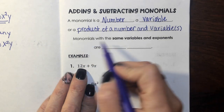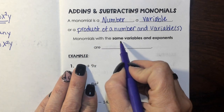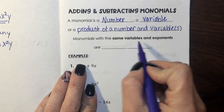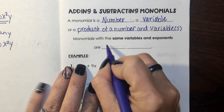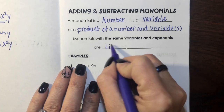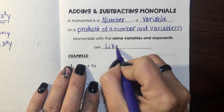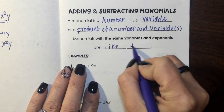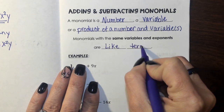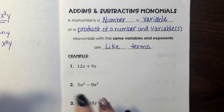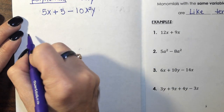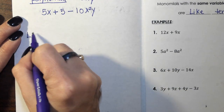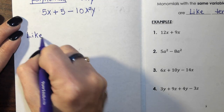So now that you've got that vocabulary down, we're going to be working with monomials and putting them together to make polynomials. Monomials with the same variable and exponent are called like terms. So let's talk about like terms.